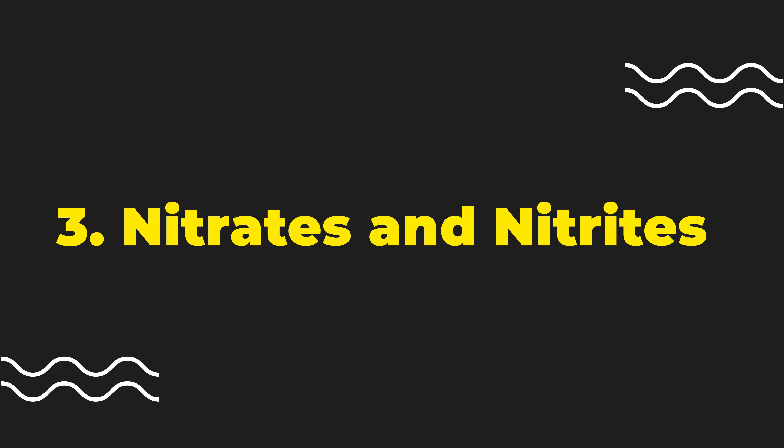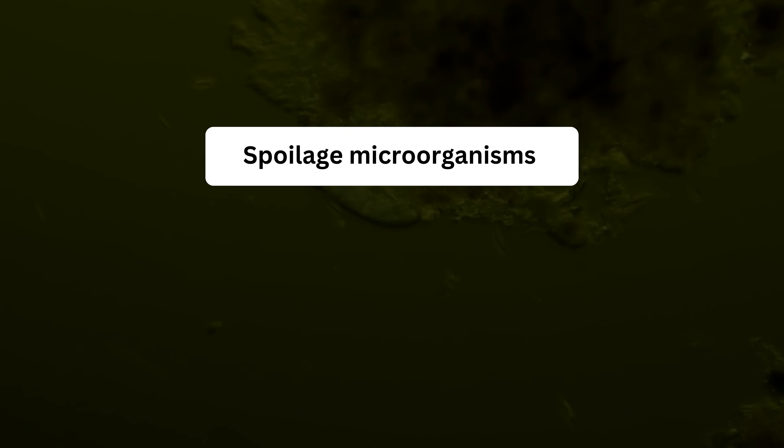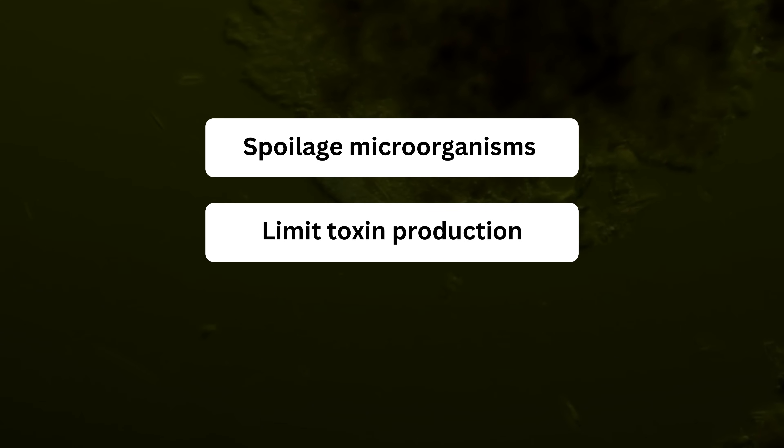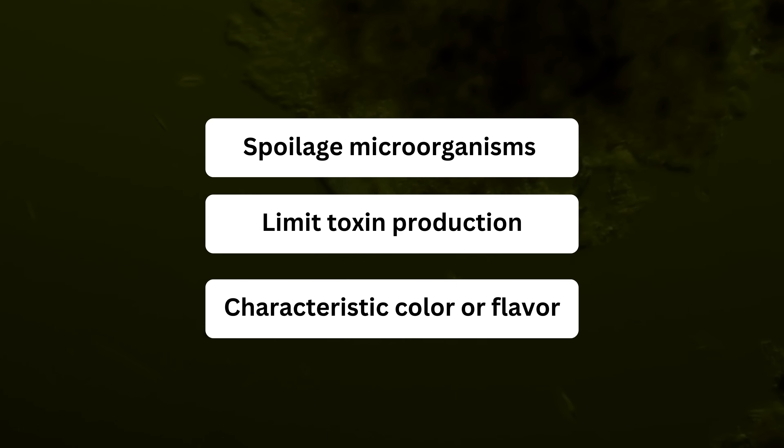Another category of food preservatives is nitrates and nitrites. Nitrites are always the active preserving agent — even if nitrates are what's added to food — because once in food, nitrates are always converted by a microorganism or another ingredient into nitrites. You'll see this type of preservative typically in any kind of cured meat, whether that's prosciutto, ham, bacon, or hot dogs. Nitrites are very useful for many reasons: they're great at stopping spoilage microorganisms, and they also stop the pathogenic bacteria Clostridium botulinum from producing a toxin that can make us very sick. Without nitrites, we also wouldn't get that characteristic pink color and flavor we associate with meats like bacon and ham.